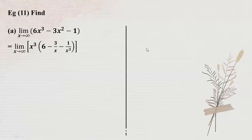We have 2x³ minus 3x² minus 1. We divide by the highest power, which is x cubed.